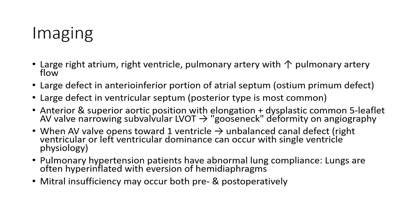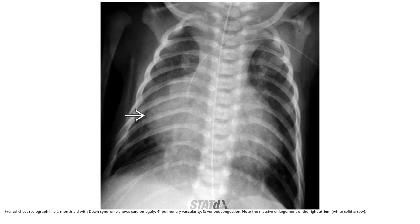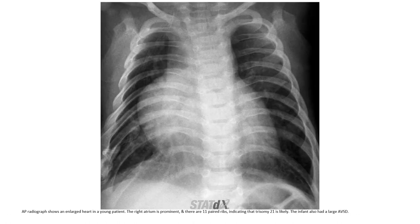Pulmonary hypertension patients have abnormal lung compliance, and lungs are often hyperinflated. Mitral insufficiency may occur both pre- and post-operatively. This is the frontal chest radiograph in a two-month-old with Down syndrome showing cardiomegaly, increased pulmonary vascularity, and pulmonary venous congestion.